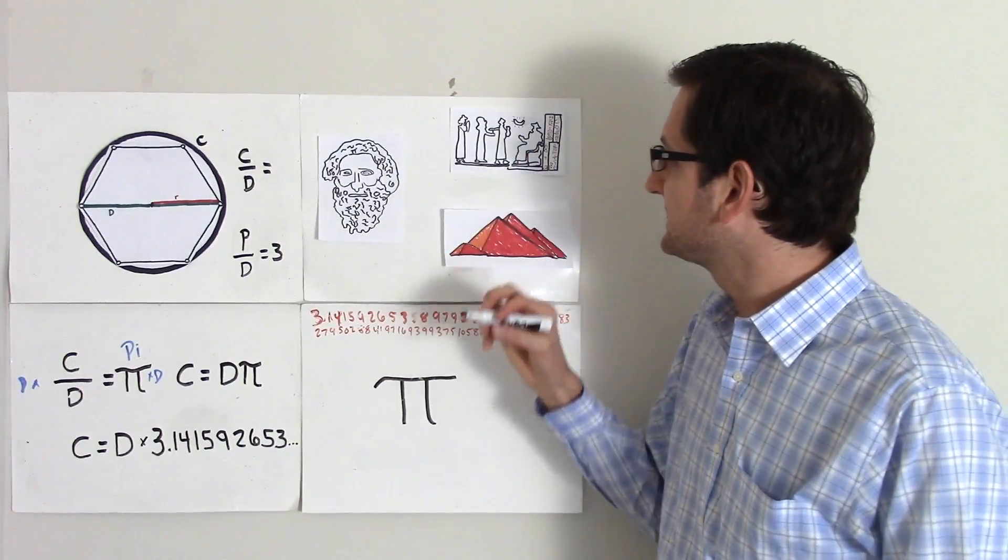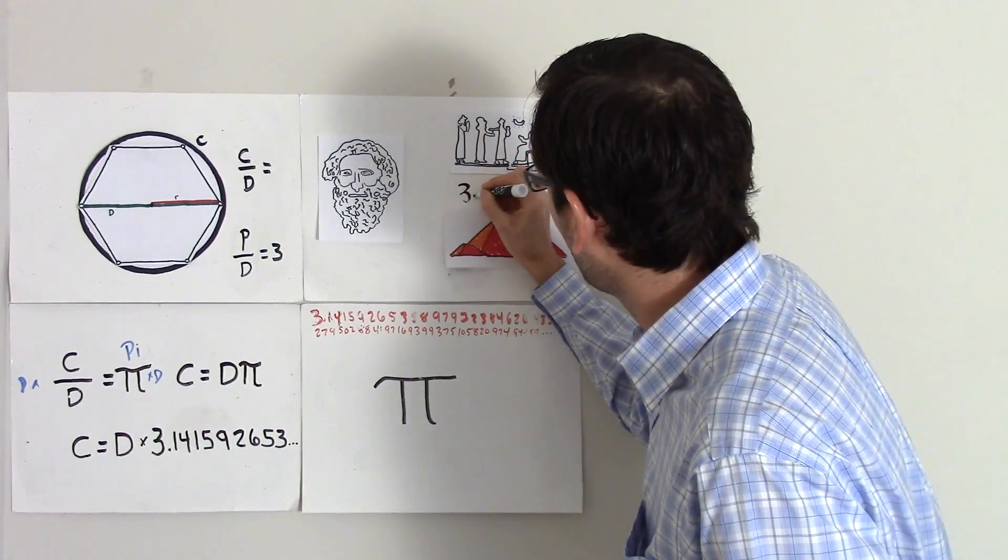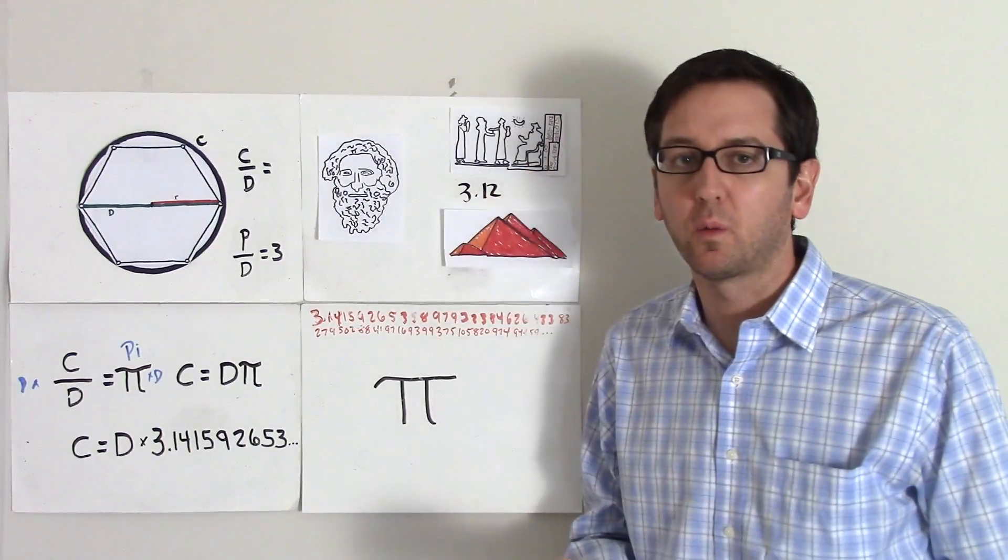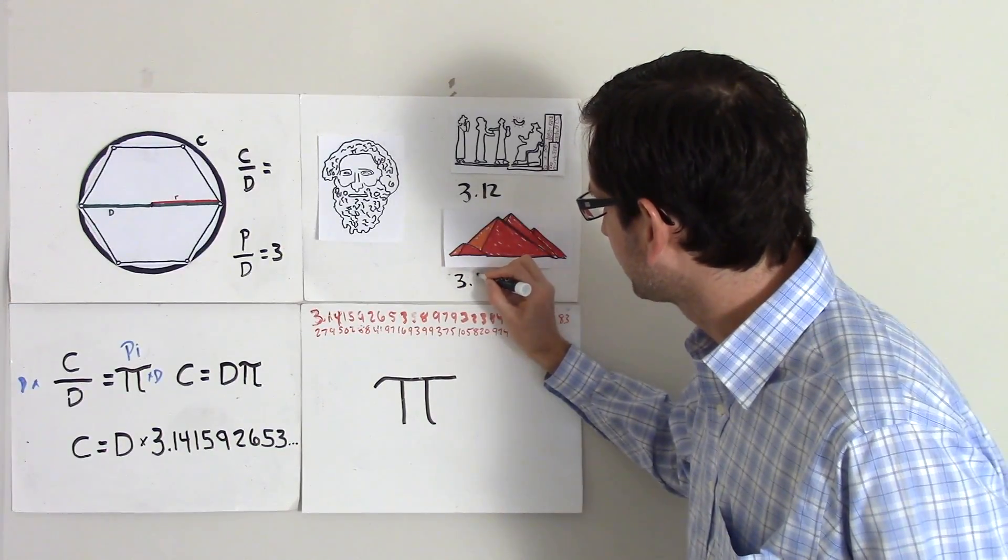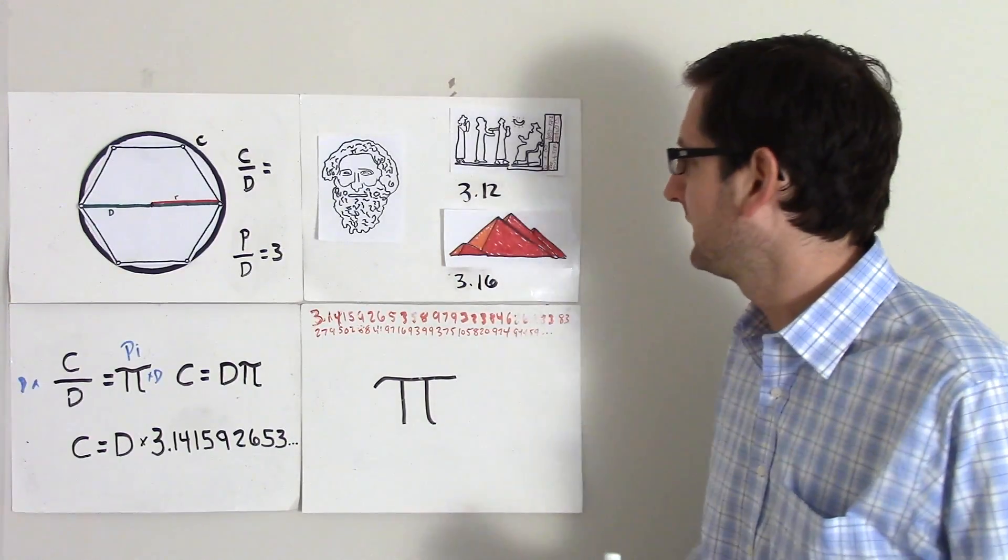Well before the Greeks, the Babylonians approximated Pi at 3.12, around 3.12, and then sometime later the Egyptians approximated 3.16, around there.